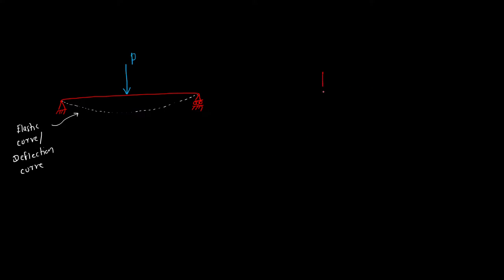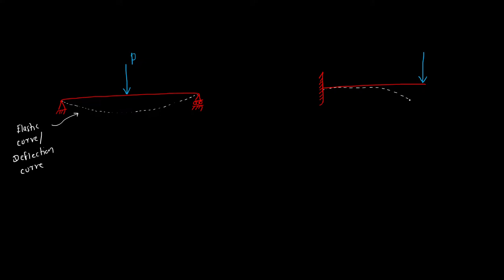Now let's take an example of a cantilever beam. In case of a cantilever beam, if the load is acting in the vertically downward direction, after bending the beam will look like this — it will bend downward in this way. This shape is also called the elastic curve or deflection curve.